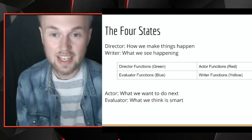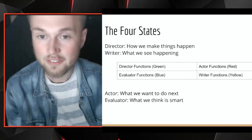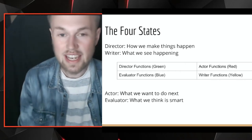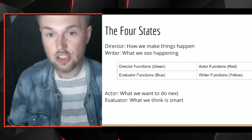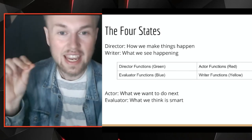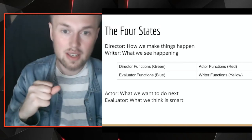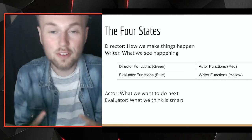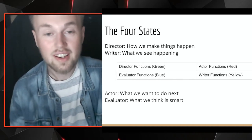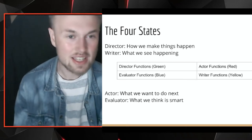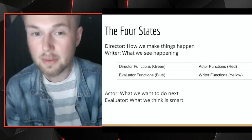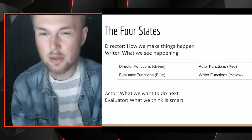There are four predominant states we all switch between: the green, red, blue, and yellow states. The green state is a director state — in its basic, balanced nature, it's primarily about direction. How am I going to get from point A to point B? How am I going to make this dream happen, fulfill my goals, have strong relationships, be a good person, or live up to expectations? When you're thinking about these things, you're engaging in the direction processes.